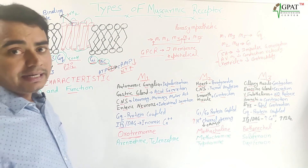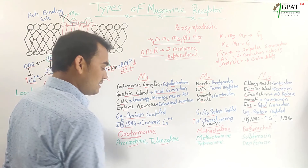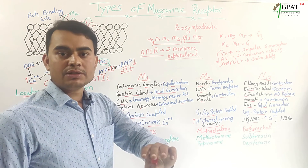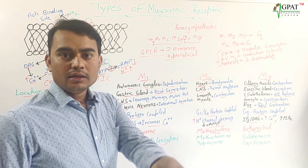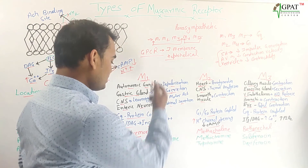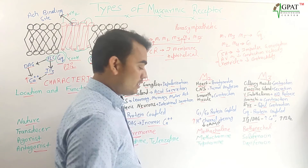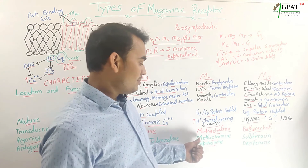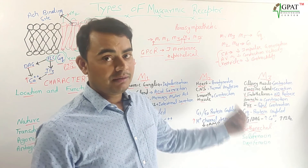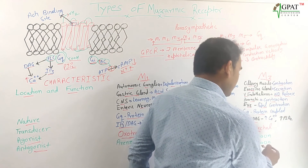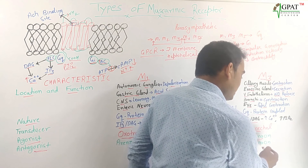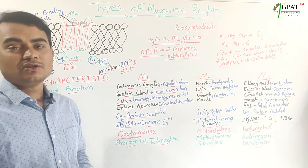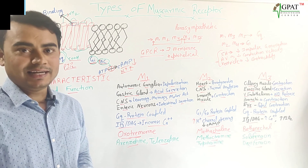For antagonists: M1 receptor antagonists are pirenzepine and telenzepine — pirenzepine is very important and has been asked in exams, including 2017. M2 receptor antagonists are methoctramine and tripitramine — methoctramine acts on the myocardium/heart similarly. M3 receptor antagonists are solifenacin and darifenacin. These are the basic characteristics of the muscarinic receptors — I hope you liked it, thank you.